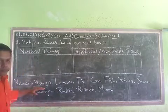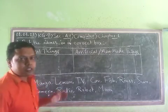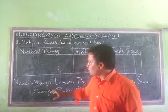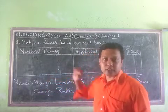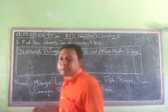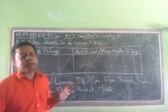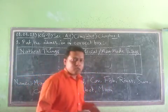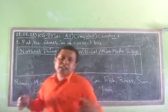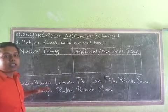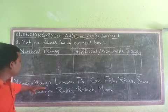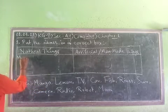The first thing is mango. Mango — we get this mango from the mango tree. Mango is produced from a tree. Man does not grow or produce a mango directly; man helps to grow the mango tree to make it big. So the mango tree gives us a juicy, tasty, and sweet mango. So mango is a natural thing and we write it in the natural things box.